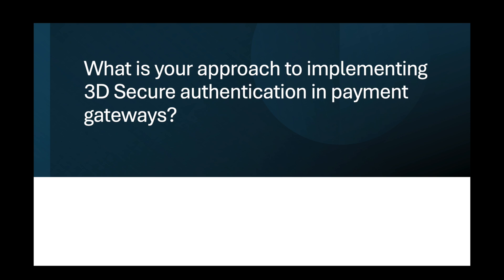The implementation of 3D Secure begins with enabling the feature within the payment gateway. Most modern gateways like Stripe or Braintree support 3D Secure, particularly the more user-friendly 3DS2. Unlike its predecessor, 3DS2 is designed to provide a smoother user experience especially on mobile devices, and supports biometric authentication and risk-based analysis where low-risk transactions may not require explicit user action. I configure the gateway to automatically trigger 3DS authentication based on risk assessments or when required by regulation.